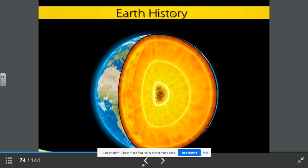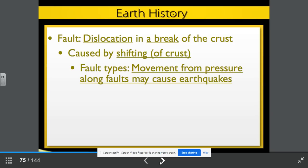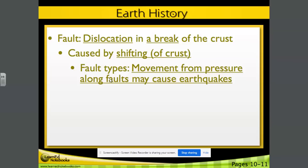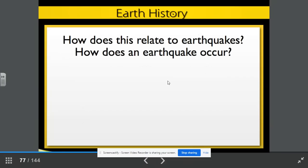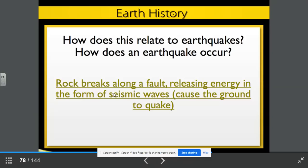Here you can see the different parts of the Earth. A fault is a dislocation in a break of the crust. This is caused by the shifting of the crust. Fault types include movement from pressure along faults and may cause earthquakes. One side of the fault could move up, one side of the fault could move down. Plates can slide past each other sideways. How does this relate to earthquakes? How does an earthquake occur? Rocks break, rock breaks along a fault releasing energy into the form of seismic waves. This is what causes the ground to quake.